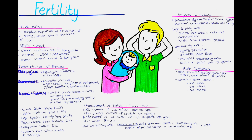Similarly, menopause — the cessation of menstrual cycles — indicates the end of a woman's fertility. The timing of menopause can also vary and affects the duration of a woman's reproductive period. Another factor is ovulation, which is necessary for fertilization and pregnancy. Regular and timely ovulation is a crucial biological determinant of fertility. Factors such as hormonal imbalances, polycystic ovarian syndrome, and certain medical conditions can disrupt ovulation, leading to difficulties in conceiving.